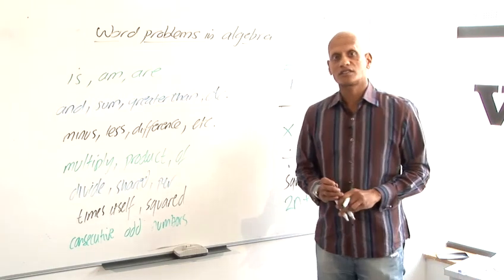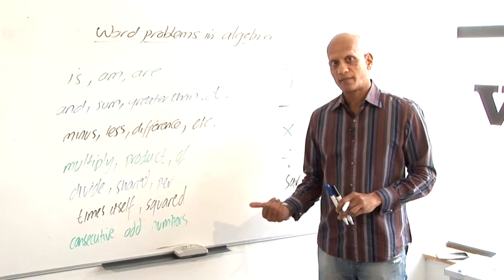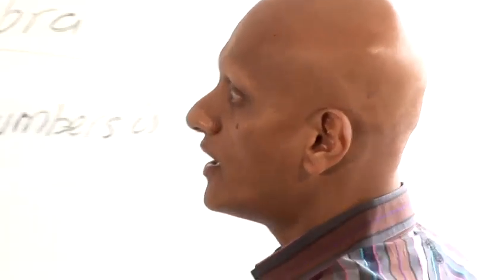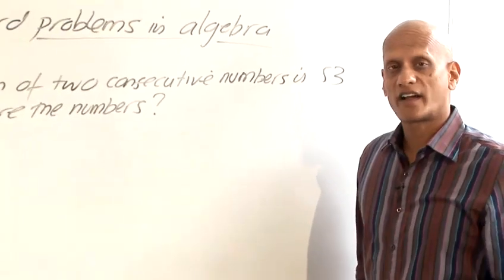Okay, so let's move on to some examples where the question is written in English and we have to convert it into mathematical equations before we can solve it. Okay, so our second example, the sum of two consecutive numbers is 53. We have to find the numbers.